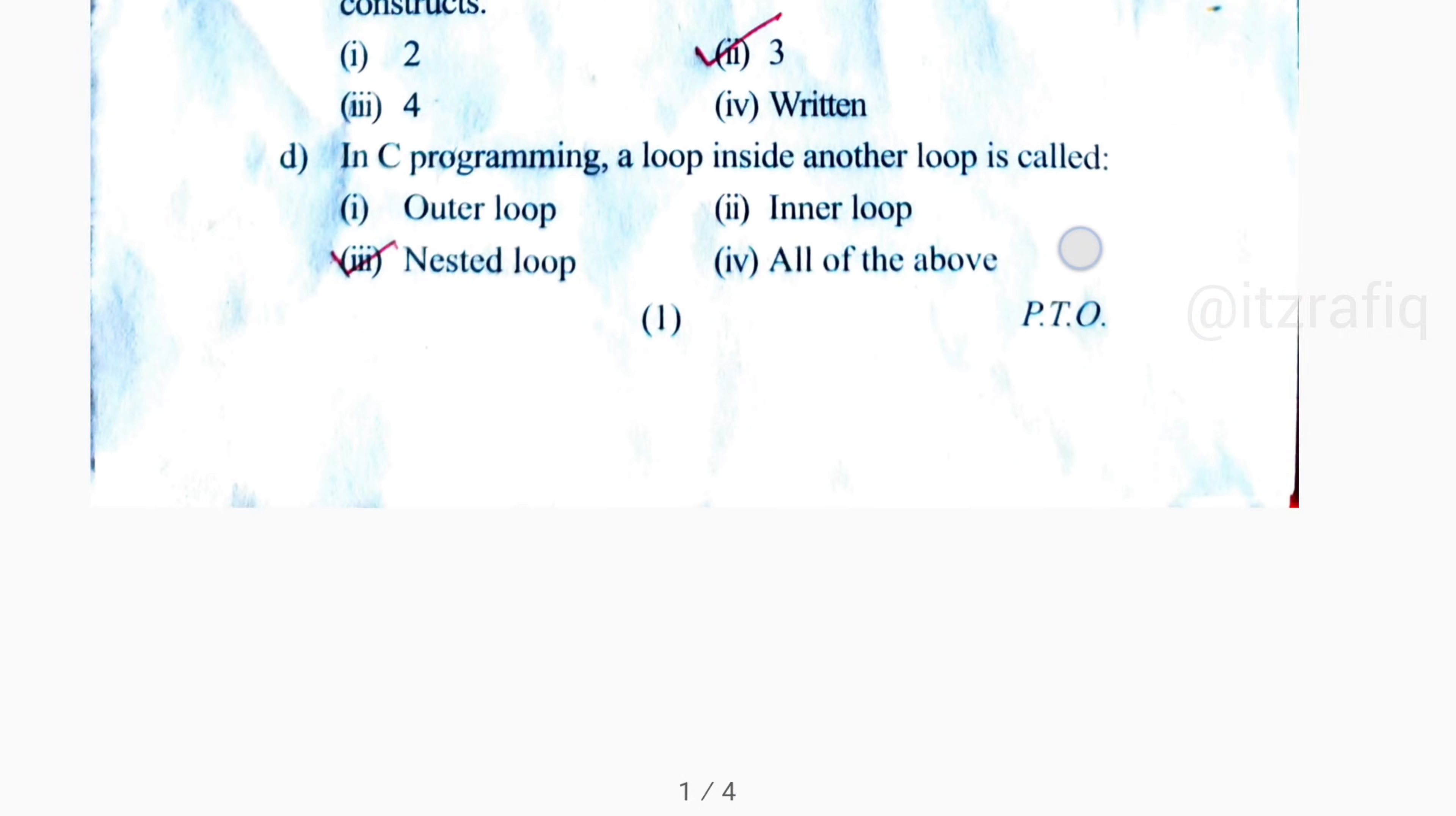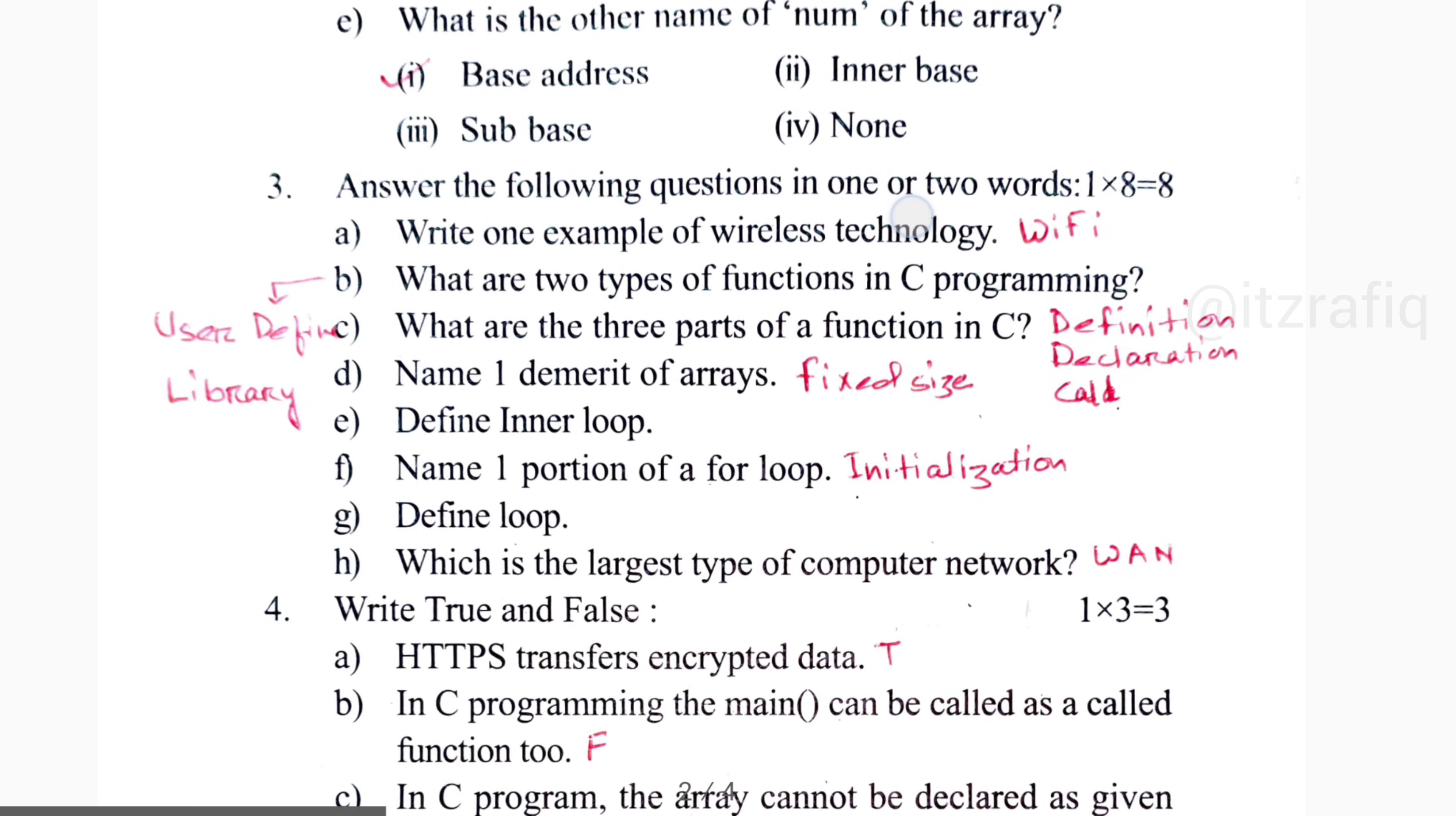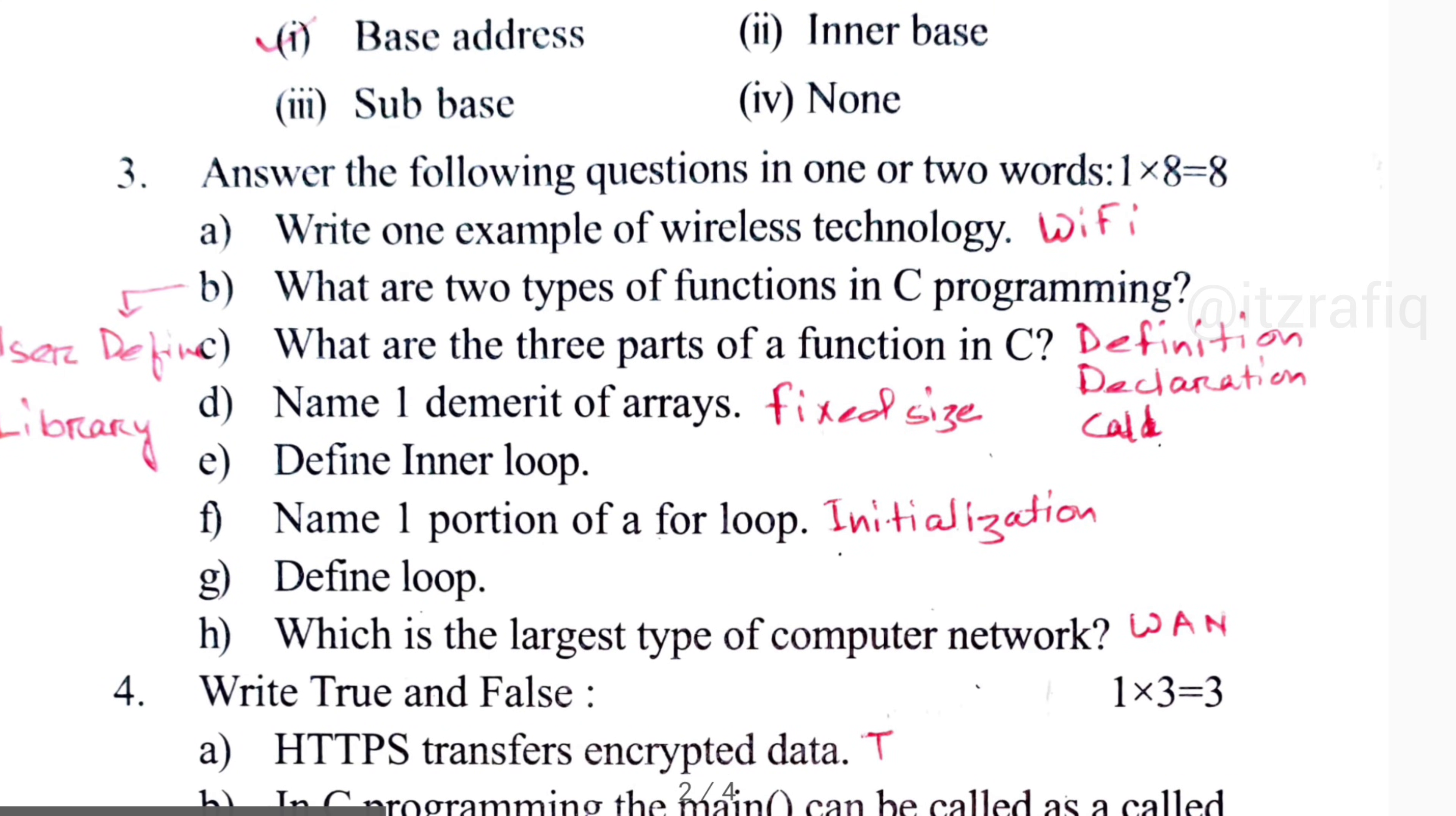Then next one, what is the name of the array? It will be base address. The name of an array is also known as base address. Then one word answer: write one example of wireless technology. You can write either Wi-Fi or Bluetooth.